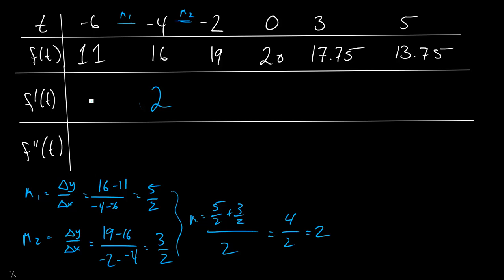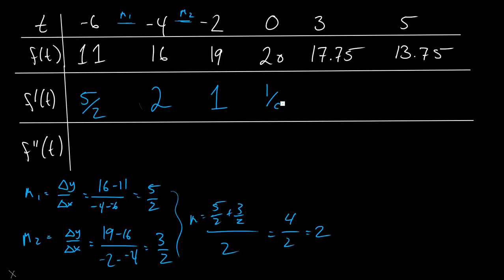For an end point, you can't go on either side and get the average, so we actually end up just using this one slope — just m1, the slope between this point and the other closest point. For here, we can use the same value we already calculated for m1 before, which is 5 halves. Using the same process for the rest of the points, you will get 1, negative 1 eighth, negative 11 eighths, and negative 2.